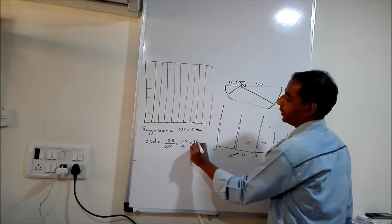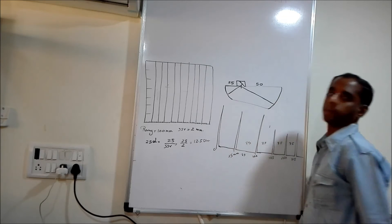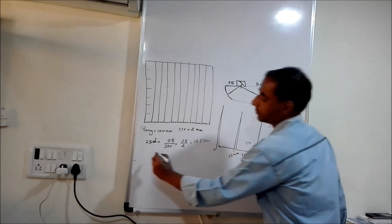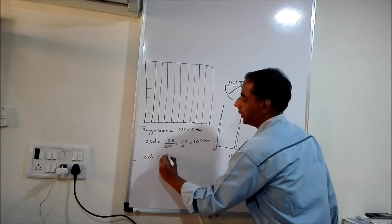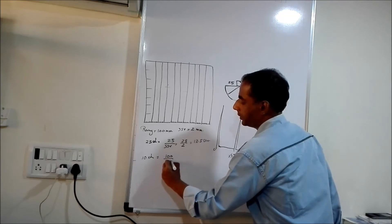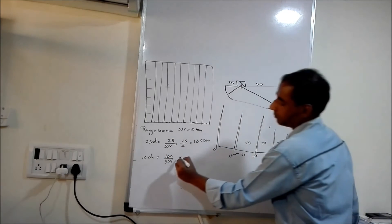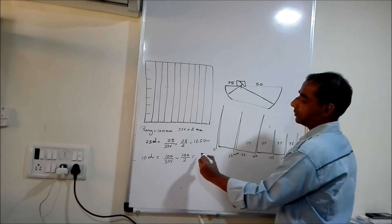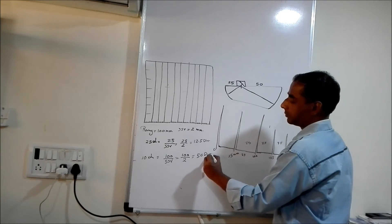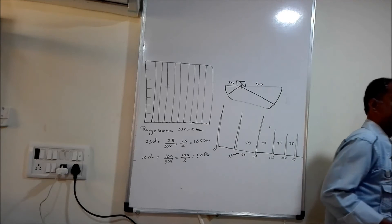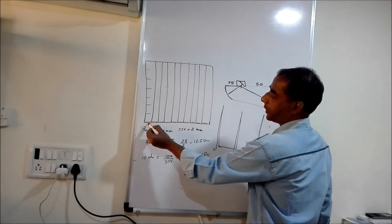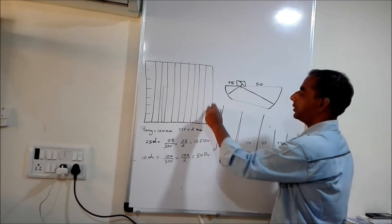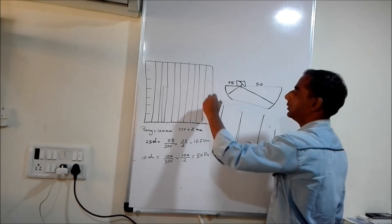So 12.5. Next, 100 divided by SSV — so 100 divided by 2 equals 50 divisions. I have to take two echoes: one at 12.5 divisions and one at 50 divisions.